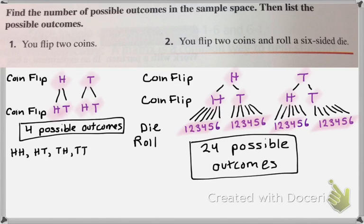I didn't list them all out because I didn't have space, but you can just go down your trees to list them all out — like HH1, HH2, HH3, HH4, HH5, HH6, and so on and so forth.